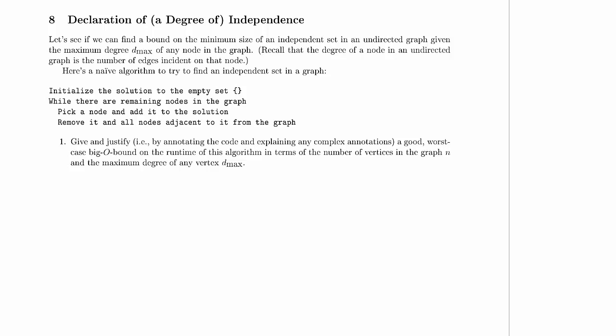Welcome to Computer Science 320, 2014 Winter 2's Midterm 1 Practice Problems. We're working on Problem 8, Part 1. Give and justify, by annotating the code and explaining any complex annotations, a good worst-case big-o bound on the runtime of this algorithm, in terms of the number of vertices in the graph n, which we usually call v, and the maximum degree of any vertex dmax. So, largest number of incident edges on any vertex.